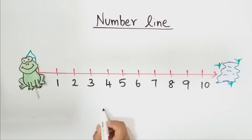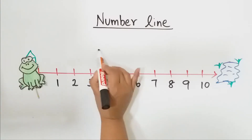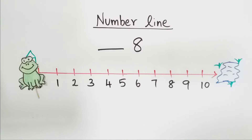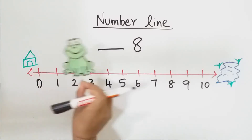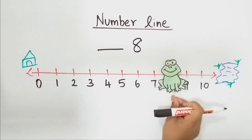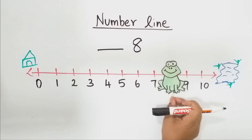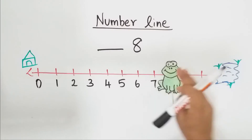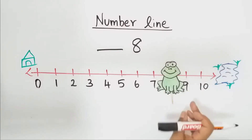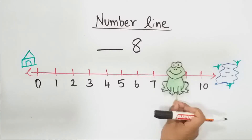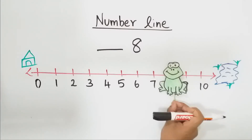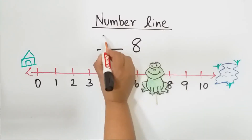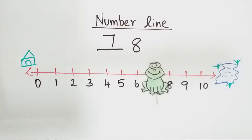Can you tell me which is the before number of eight? After a number means it is the next number. Before number means we have to go backwards. So now tell me which is the before number of eight? Seven. Very good children. So we have to write seven.